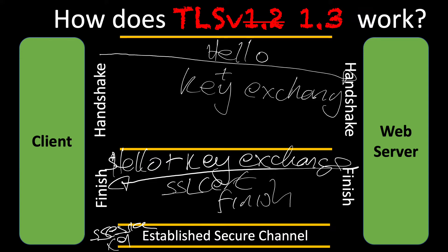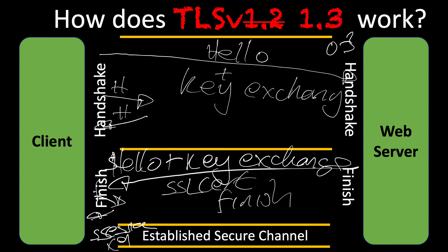In TLS 1.2, we saw two sets of round trips — a round trip for the hello, two hellos from the client and server, and then two finished packets, one from the client and one from the server. So we went from two round trips to a single round trip — that is version 1.3. In version 1.3, we did a maximum of zero to three packets, whereas in TLS 1.2 there are usually about five to seven packets.